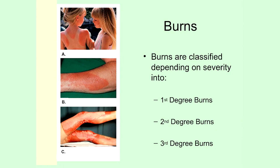First degree burns tend to heal really well on their own. Second degree burns also tend to heal well on their own as long as you don't get infection. But third degree burns do not heal on their own, because the stem cells capable of replacing damaged skin are located around hair follicles embedded in the dermis. If you destroy the dermis, as with a third degree burn, you've destroyed those stem cells, preventing them from being able to replace the skin.